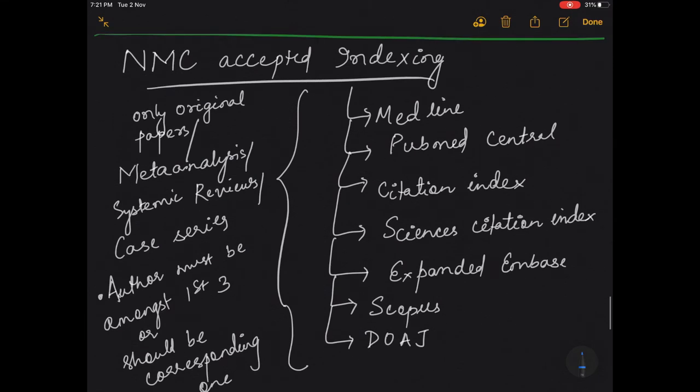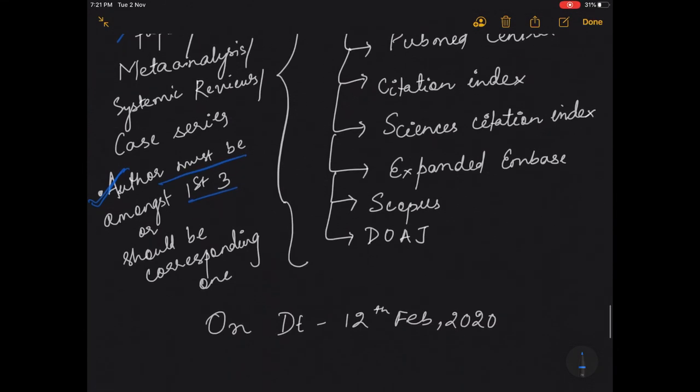Now coming to what are the latest guidelines by the NMC regarding the indexing and what are the accepted indexing. Only research for promotion in NMC recognized colleges: only research papers or meta-analysis or systematic reviews and case series are accepted. Apart from that, the author must be amongst the first three or should be a corresponding one.